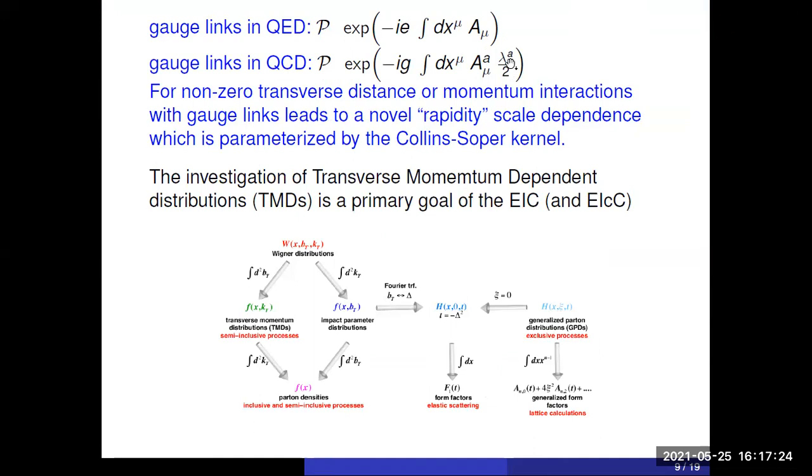The same is true of QCD, with the only difference that instead of one photon, you have eight gluons, and they come together with three times three matrices. Now, whenever you have non-zero transverse distance or non-zero transverse momentum, you get funny effects from these gauge links, and they are dominated by a quantity which is called Colin-Soper kernel, which describes something which technically is called rapidity scale dependence. And one needs this function to describe these effects.